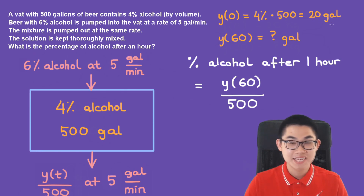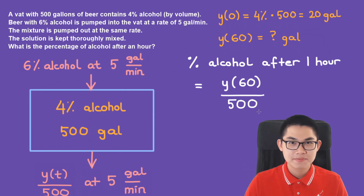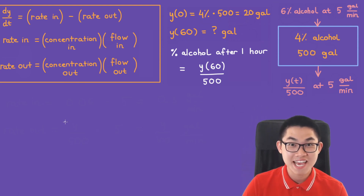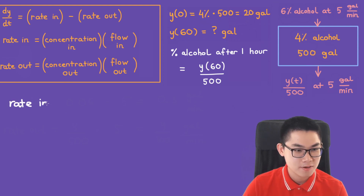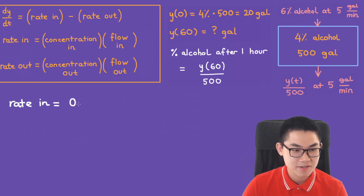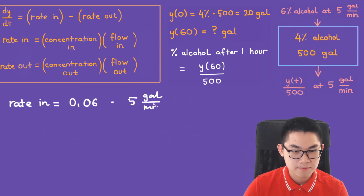The problem wants us to find the percentage of alcohol after an hour, which is y(60) divided by 500, so we need to find y(60). Using our standard formulas, the rate in equals the concentration in — 6%, or 0.06 — times the flow in of 5 gallons per minute, giving 0.3 gallons per minute.